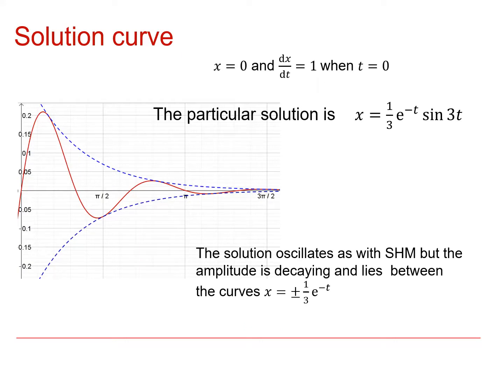If we have a look at the solution curve for this, a couple of things to point out on here. Firstly, notice that this blue dotted line here and here form an envelope for the oscillating function. So over time, the amplitude is restricted to between these two blue curves. And these blue curves come from the 1 third e to the minus t bit of this. And the second thing to notice is that we've got a sine 3t. And that means that the period of the oscillation is going to be 2pi over 3.